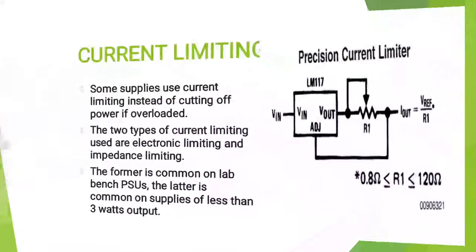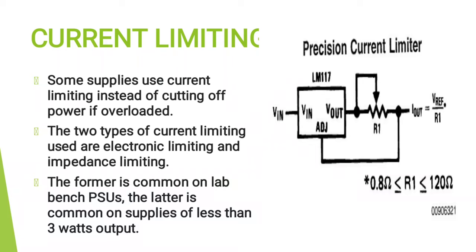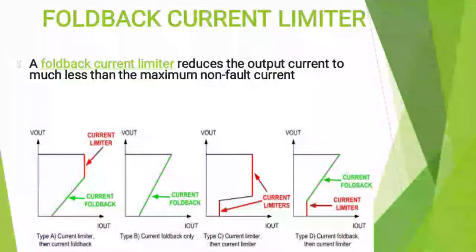Some supplies use current limiting instead of cutting off power if overloaded. The two types of current limiting used are electronic limiting and impedance limiting. The former is common on lab bench PSUs; the latter is common on supplies of less than 3 watt output. A foldback current limiter reduces the output current to much less than the maximum non-fault current.